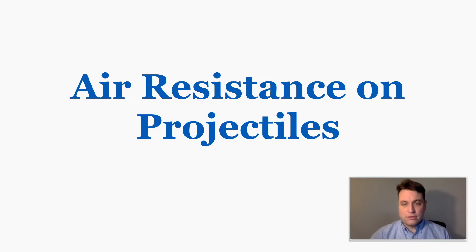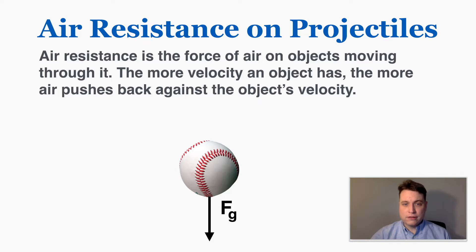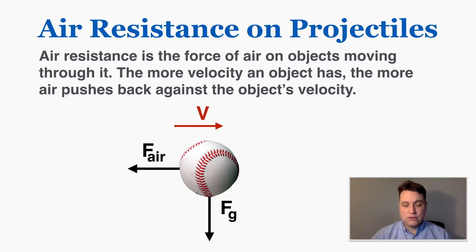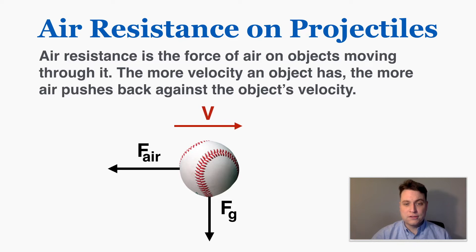This lecture is about the effect of air resistance on projectiles. Air resistance is the force of air on objects moving through it. The more velocity an object has, the more air pushes back against the object's velocity. We can imagine a ball getting faster and faster through the air, and as a result the force of air resistance gets bigger and bigger on the ball.